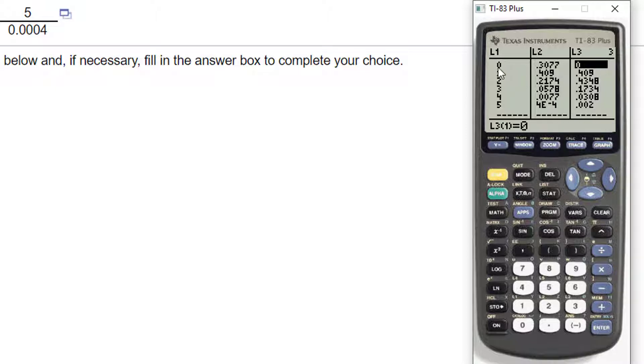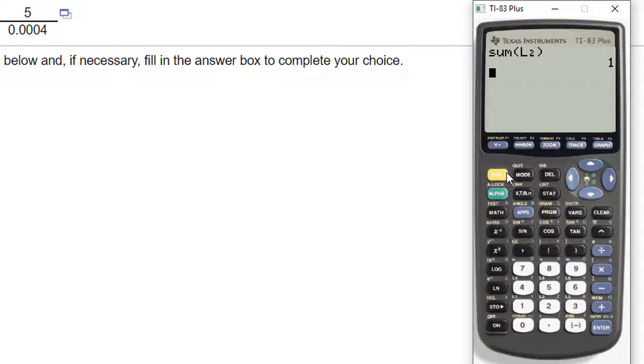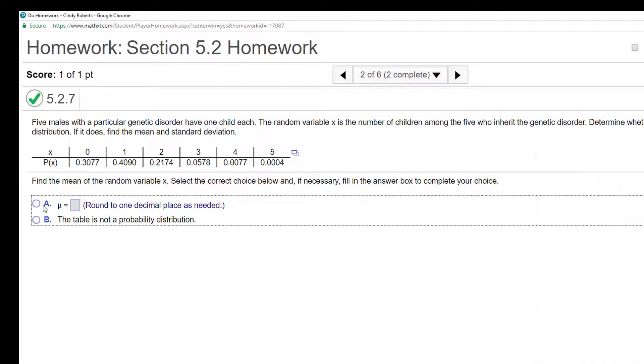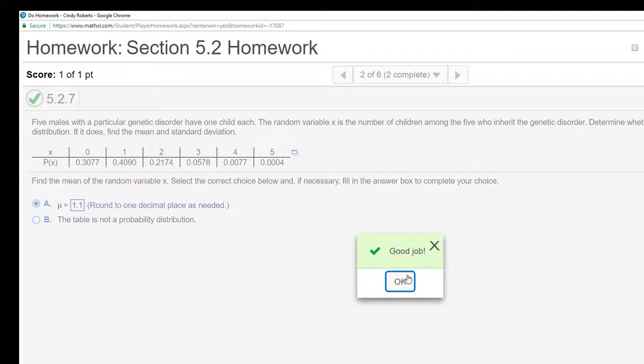So again, just by looking at this, this is L1 times L2. So I want to sum those up. So second stat down to sum. That was column L3. So second three. And I get 1.05, but it says round to one decimal place. So 1.05 would be 1.1. Good job.